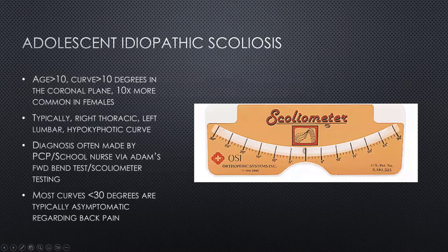A couple of definitions — one of my attendings taught me the rule of tens for adolescent idiopathic scoliosis: age greater than 10, curve greater than 10 degrees in the coronal plane, and it is 10 times more common in females. The typical curves we see are right thoracic, left lumbar, and generally these patients are hypokyphotic in the sagittal plane.